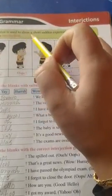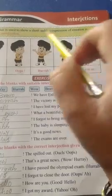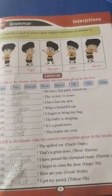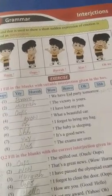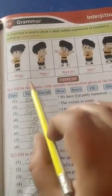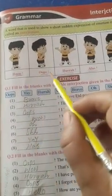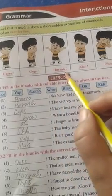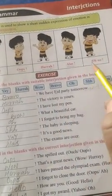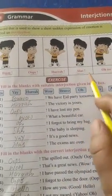A word that is used to show a short sudden expression of emotion is called an interjection. Interjections are those words which we use when we hear something strange. Here are some words of interjection: oops, hurrah, alas, oh no. These are some words of interjection we use these words according to their need, according to the need of the sentence.